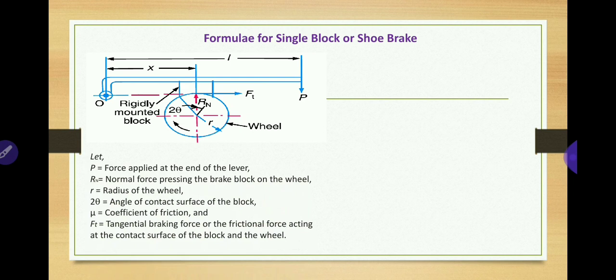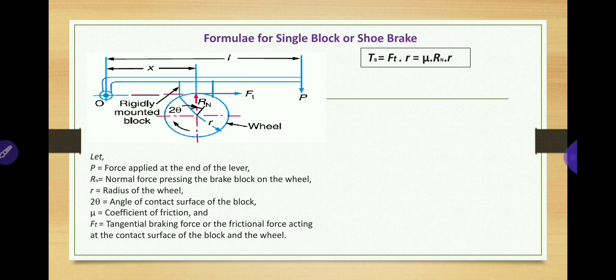Before starting, all theoretical parts regarding the single block or shoe brake can be studied on the link given in the description box. Please watch that video first, then come to solve these problems. The breaking torque for a single block brake is Ft into R, where Ft is the tangential frictional force, found by mu into Rn, and R is the radius of the wheel.